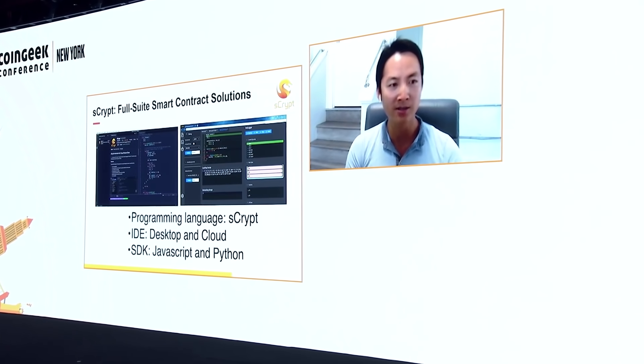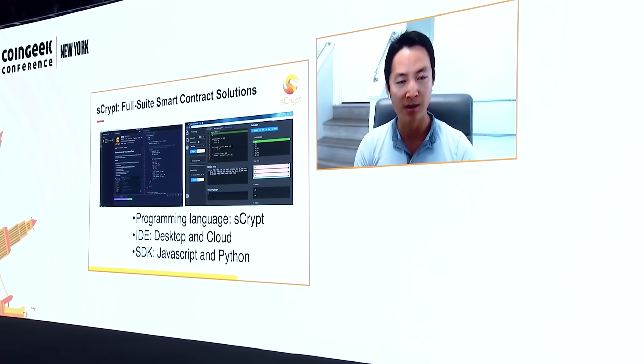What sCrypt provides is a full-stack smart contract solution exclusively on Bitcoin SV. We have a number of products. Number one, we have a high-level programming language. Think about it like JavaScript — you can onboard developers regardless of whether they have a blockchain or Bitcoin background. As long as they have any programming background, it's very easy to start programming on Bitcoin. They don't have to know all the details.